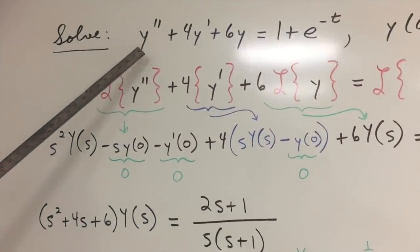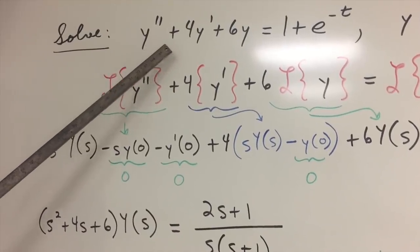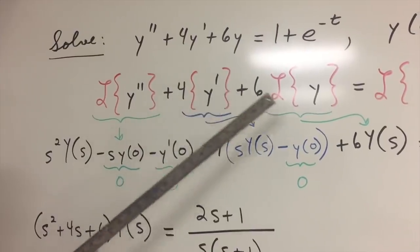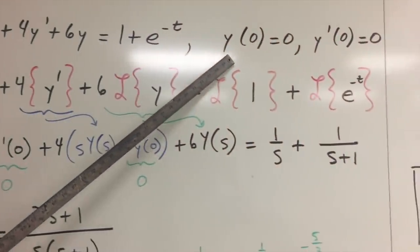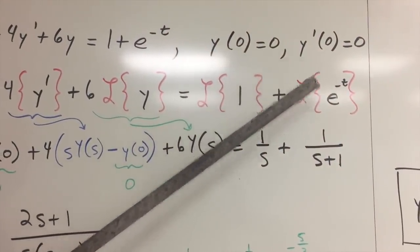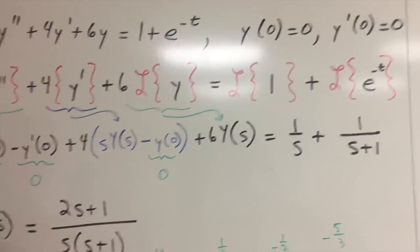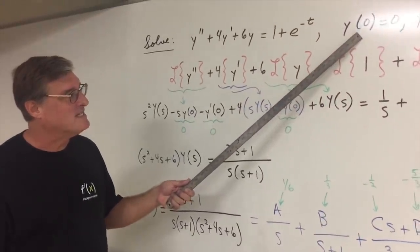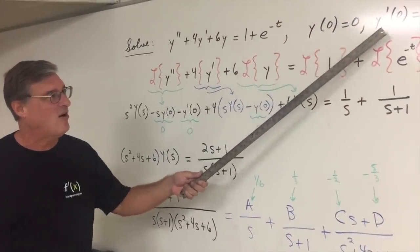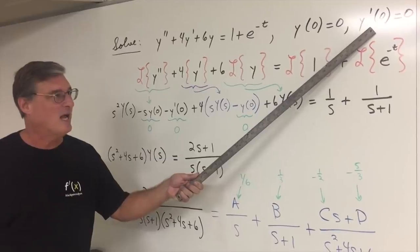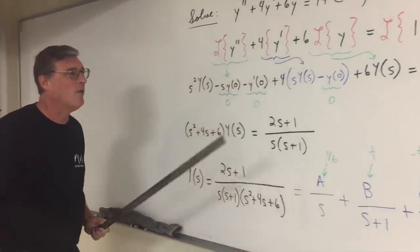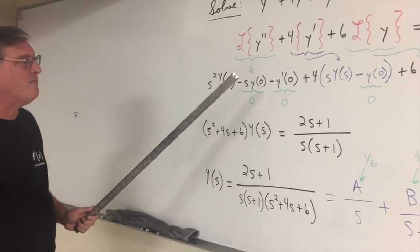We're going to go through this and it is beautiful what happens here. But for those of you that know something about the Laplace transform method, sometimes you get involved in some messy algebra. So let's take a look at this problem. We want to find y of t such that y'' + 4y' + 6y = 1 + e^(-t). Initial conditions y(0) = 0, y'(0) = 0.